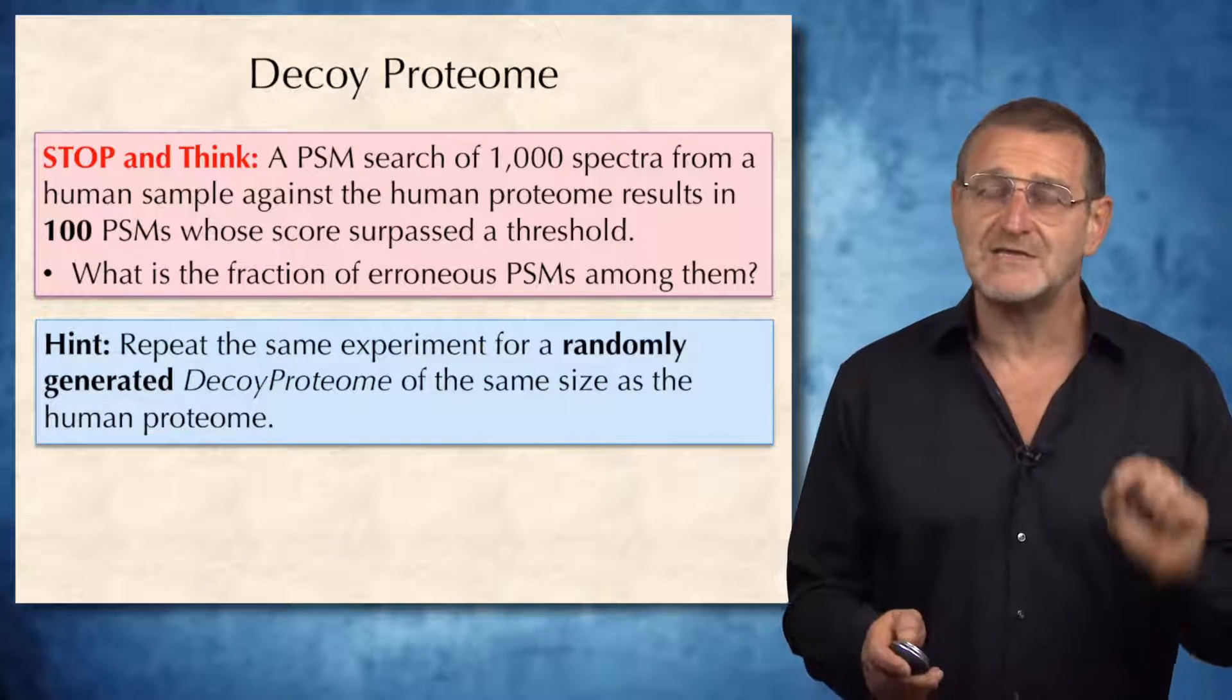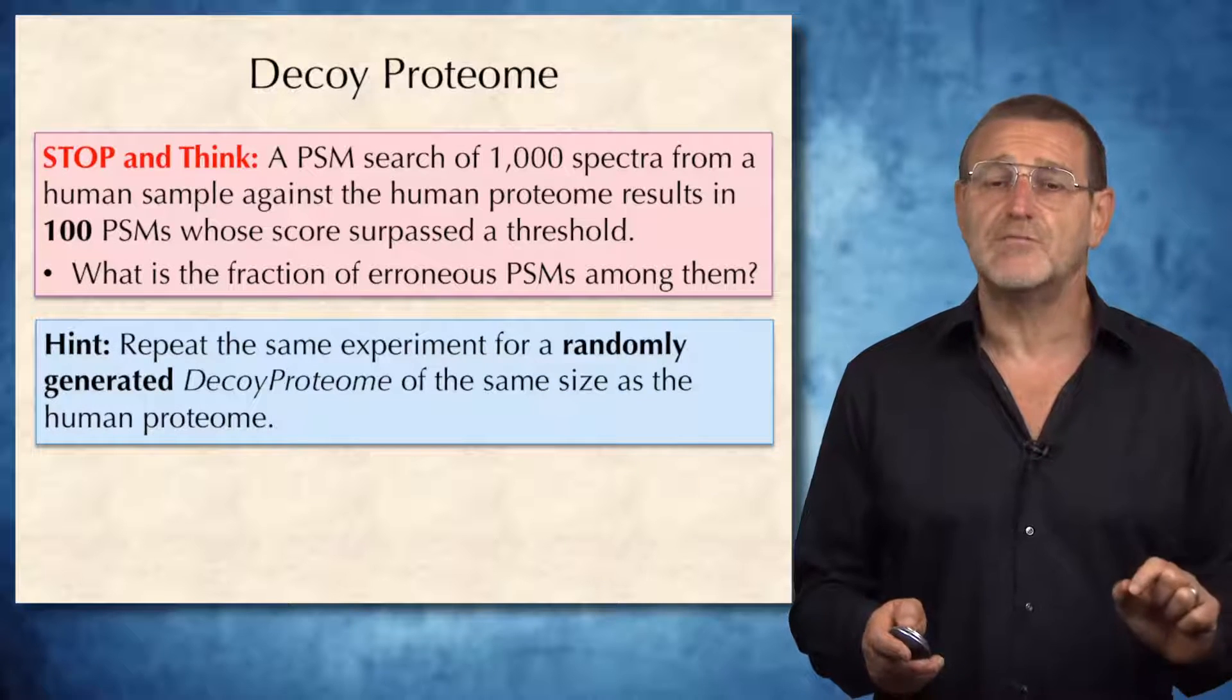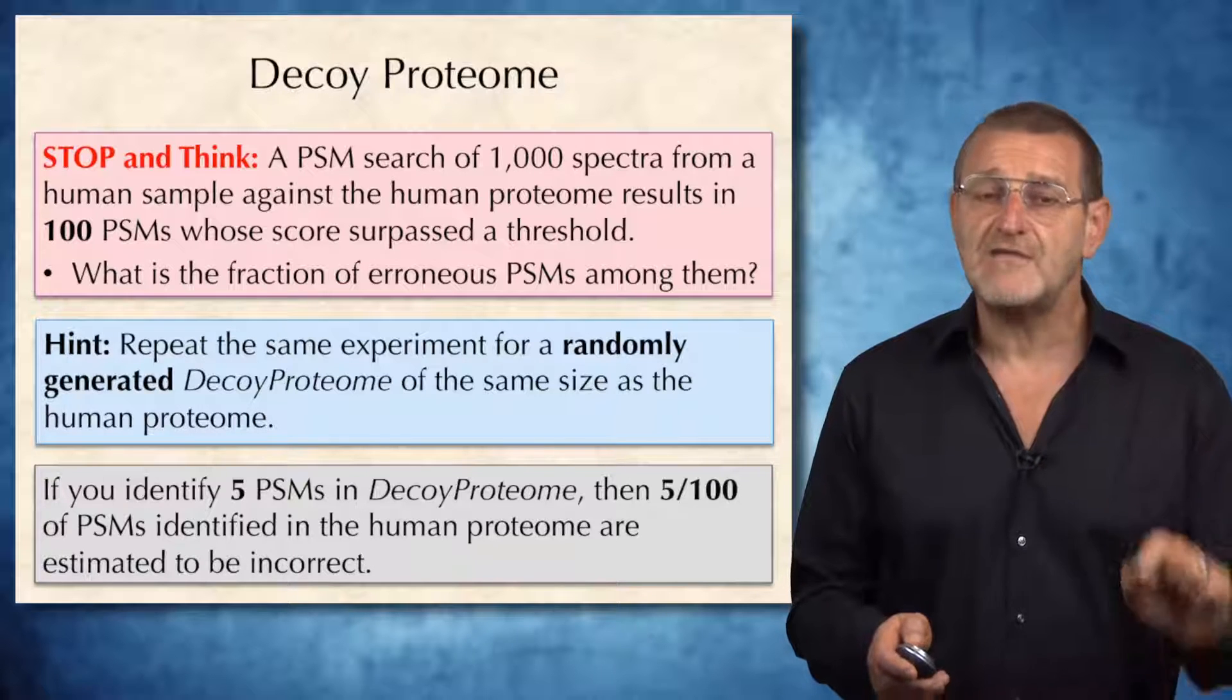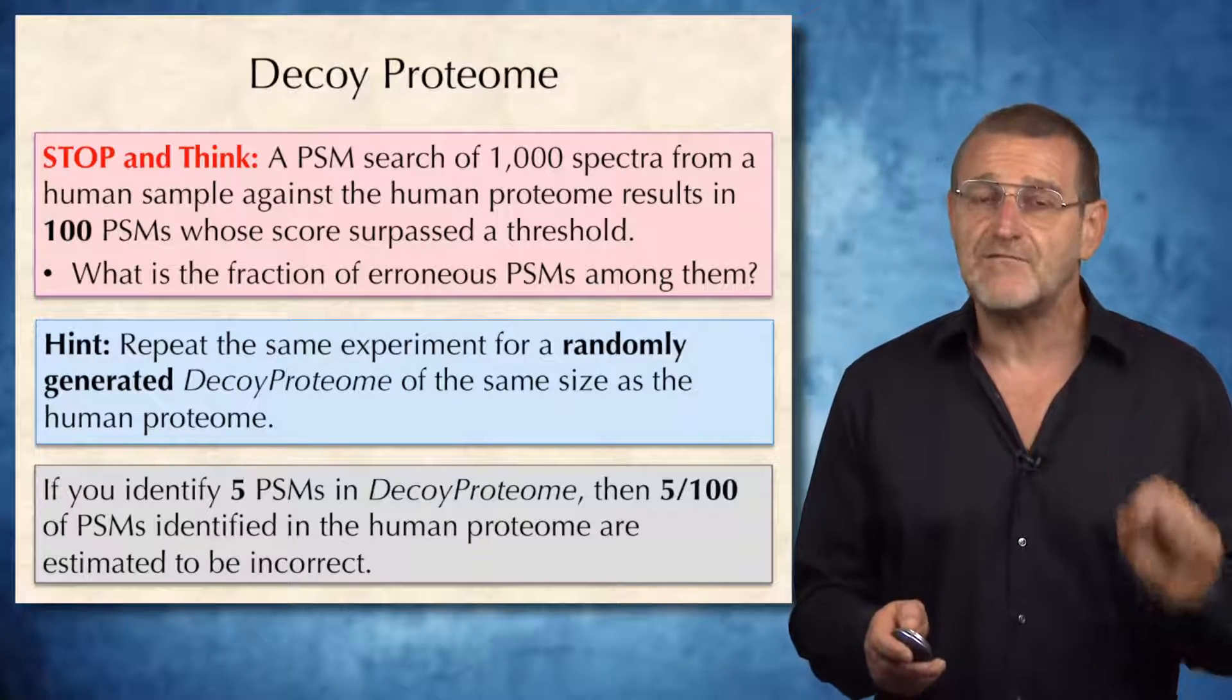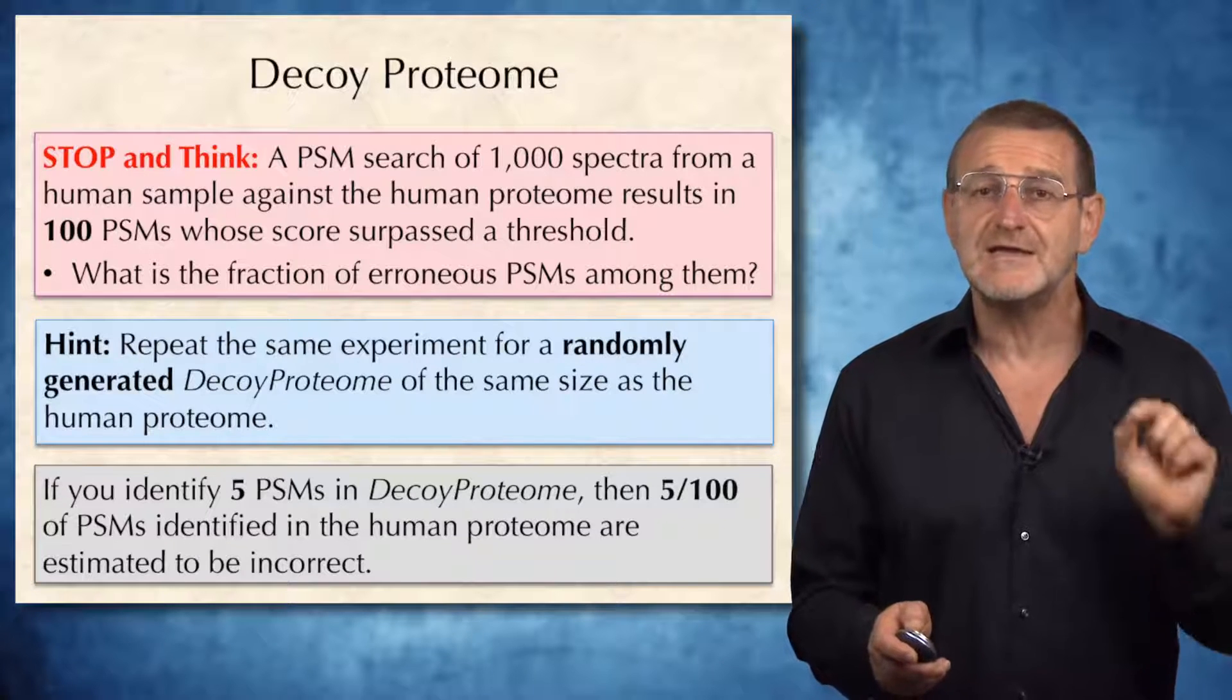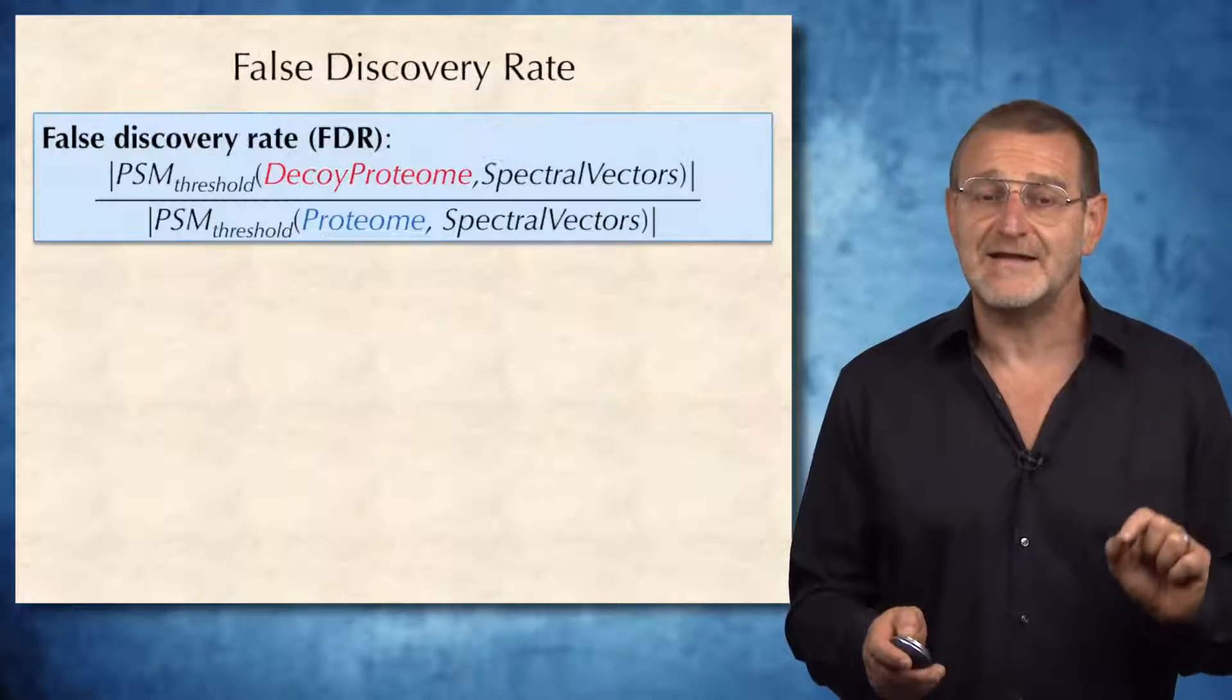What we care about is the number of such hits in decoy proteome. For example, if you identify 5 peptide spectrum matches in decoy proteome, then you expect that 5 over 100, or 5% of PSMs identified in the real human proteomes are incorrect.